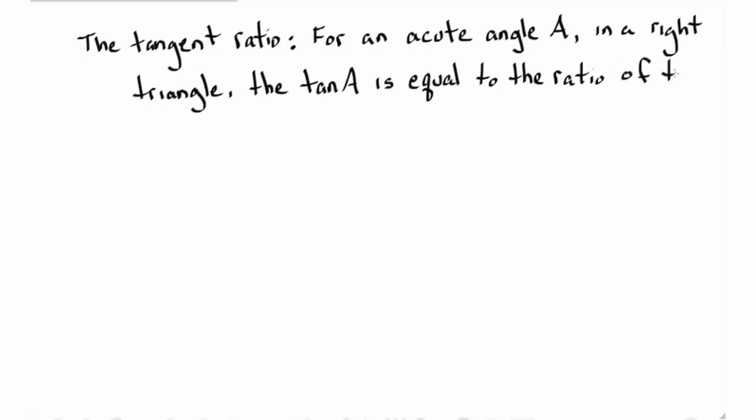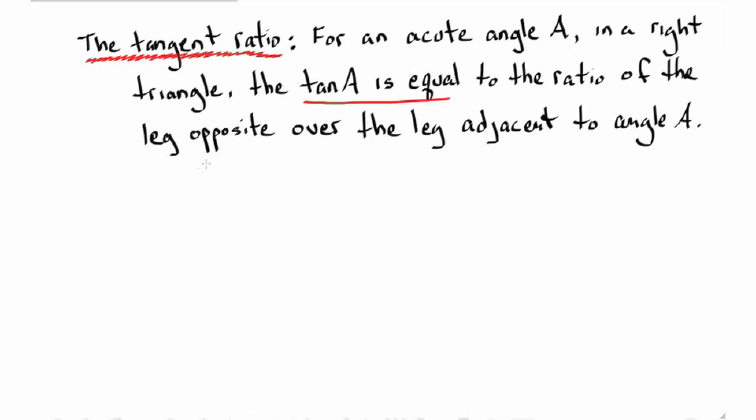Let's take a look at the tangent ratio. For an acute angle A in a right triangle, the tangent A is equal to the ratio of the leg opposite over the leg adjacent to angle A. Tangent A equals opposite leg over adjacent leg.